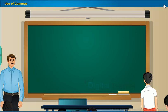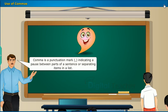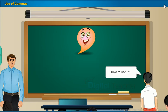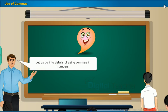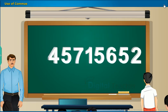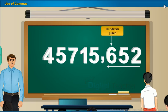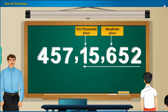Let us see the conversation between teacher and student on uses of comma. What is a comma? Comma is a punctuation mark indicating a pause between parts of a sentence or separating items in a list. How to use it? Let us go into details of using commas in numbers. See the number shown on the screen. Here, the first comma should come after hundreds place, that is three digits from the right and marks thousands. The second comma comes two digits later, that is five digits from the right. It comes after tens thousands place and marks lakh. The third comma should come after tens lakhs place and marks crore.